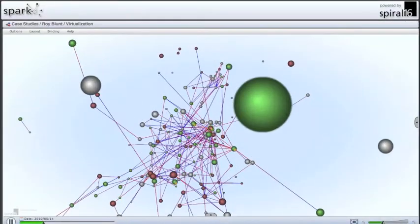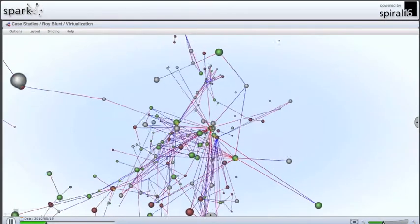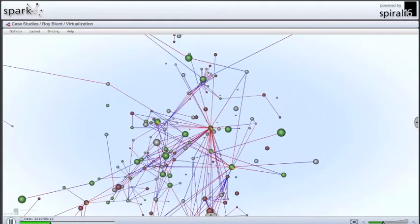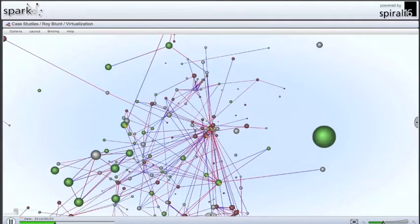Hi, I'm Aaron Weber, Data Analytics Manager with Spiral 16. We've been using our web monitoring platform to look at the race between Robin Carnahan and Roy Blunt for the Missouri Senate seat.